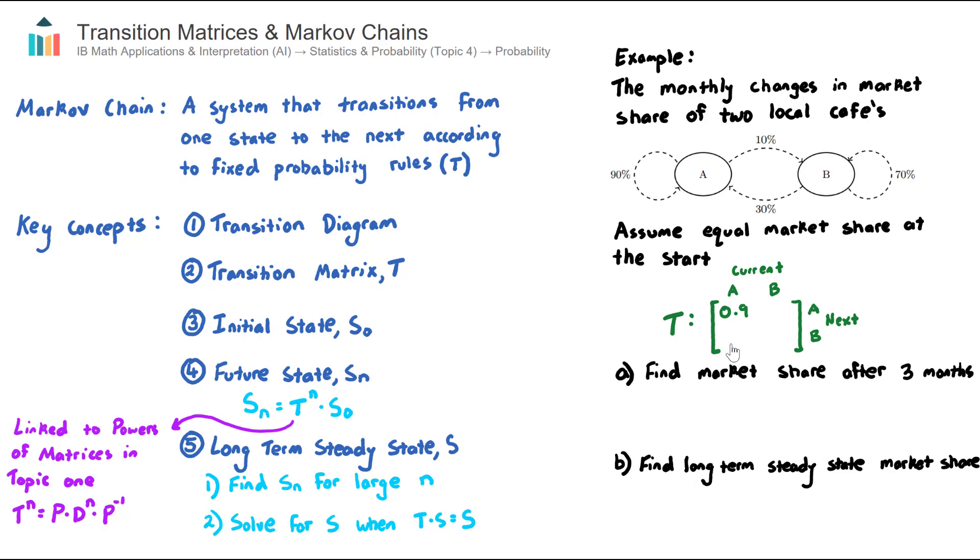Looking at the element below that, that represents the percentage that are currently at cafe A, but are then lost to cafe B. So that will be this 10% here. We can use the same line of thinking for the second column. So this 0.3 represents the customers that are currently at B, and get lost to cafe A. And this 0.7, the customers that are currently at B, and remain at B. So that's our transition matrix here. That represents the change in market share of these two cafes each month. So each month is the interval.